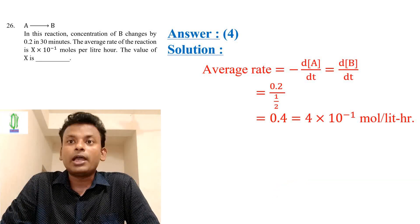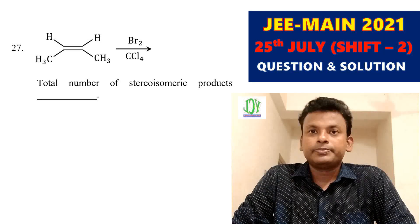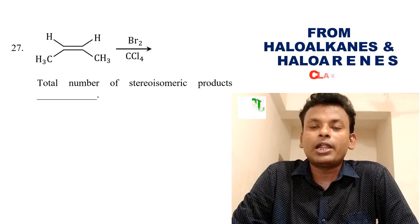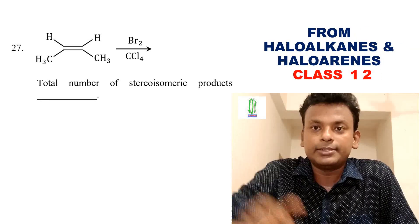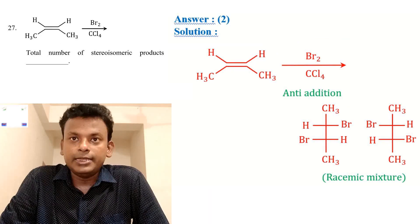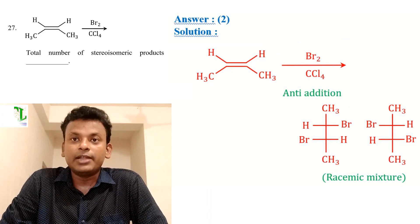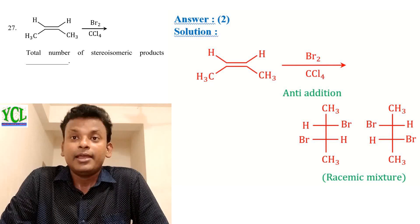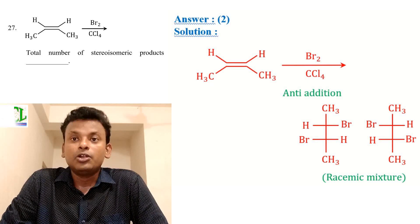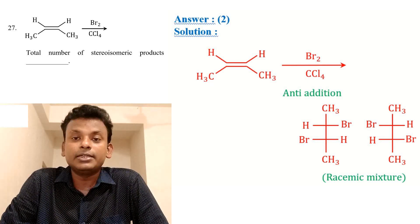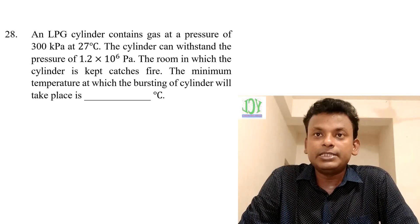Question 27: Total number of stereoisomeric products in the given reaction. The answer is 2. Br2/CCl4 reacts with an alkene via anti-addition, giving a racemic mixture. So the total number of stereoisomeric products is 2.